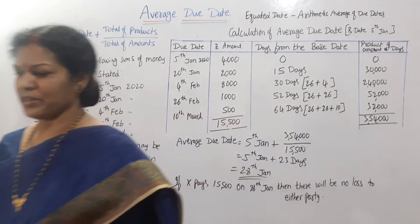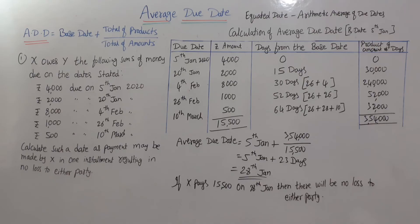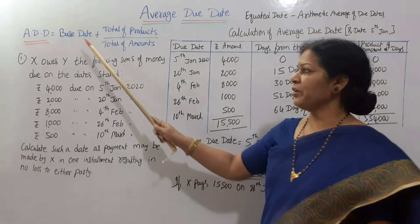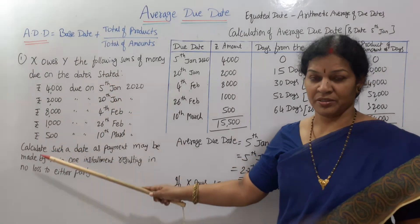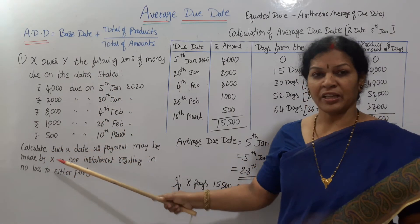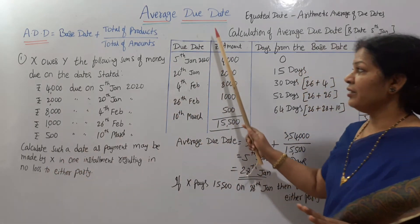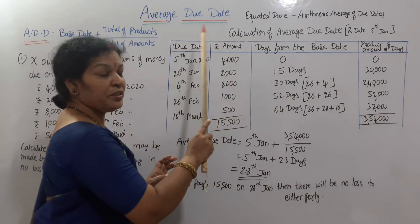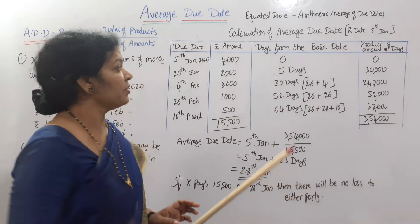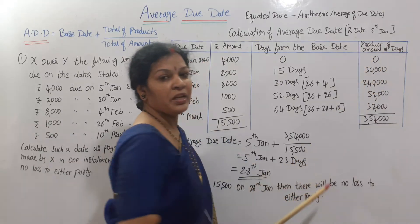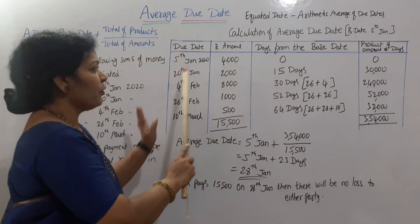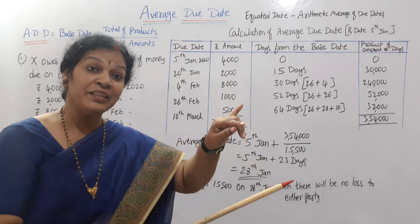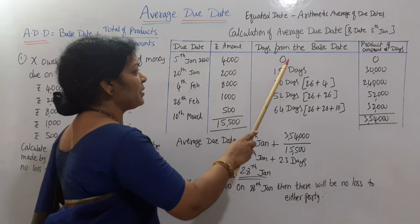Let me give you a recap. The Average Due Date formula — you remember it? In the problem, dates and amounts are always given and they ask you to calculate the Average Due Date. We provide four columns for the calculation: always remember four columns — 1st column is due date, 2nd column is amount, 3rd column is days from the base date, and 4th column is products of amount and days.